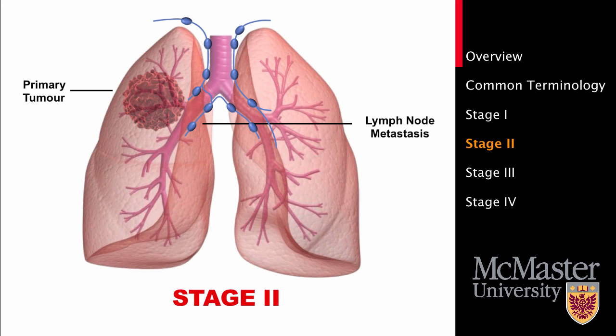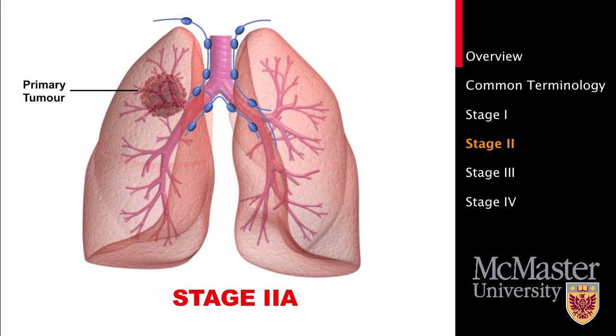Stage 2 lung cancer tumors are slightly larger than those of stage 1. The cancer may have spread to the lymph nodes on the same side of the chest and/or to other tissues in the chest. There are two subtypes of stage 2 lung cancer. The first subtype is 2a, where the tumor has a width of 5–7 cm and has not yet spread to the lymph nodes, or the tumor is less than 5 cm but has spread to lymph nodes on the same side of the chest.